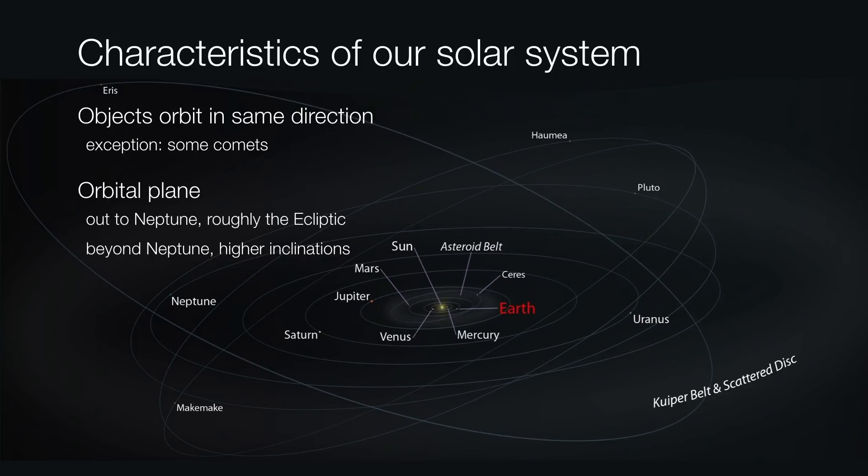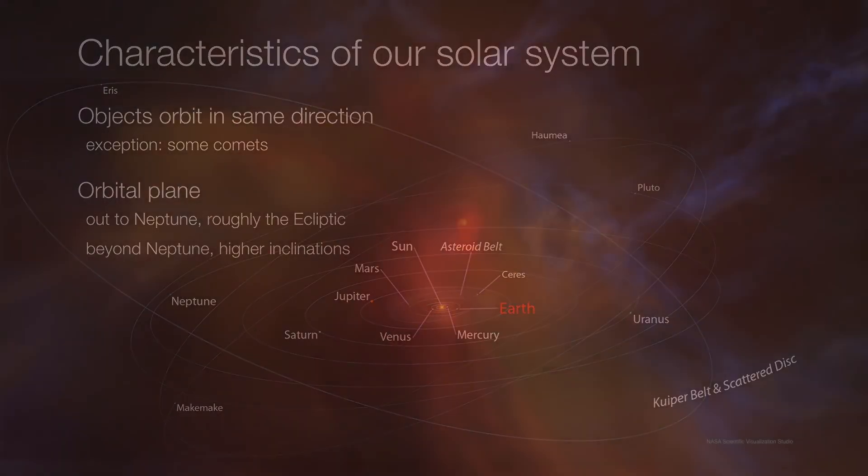If we're going to put together a model of how the solar system formed, it's important that whatever we consider has to reproduce what we currently see today. And astronomers have a pretty good hypothesis as to how our system formed.